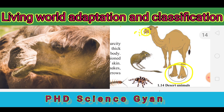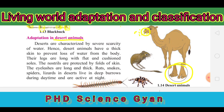In the desert region, there are different types of small animals also seen. They live in deep burrows during the day and come out at night. Animals like snakes, spiders, lizards, etc. follow this pattern.